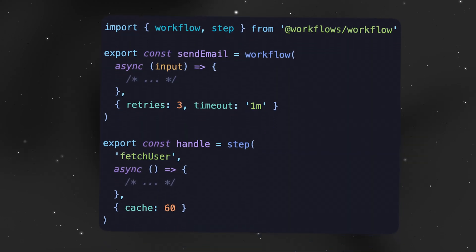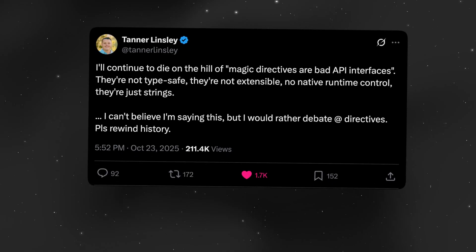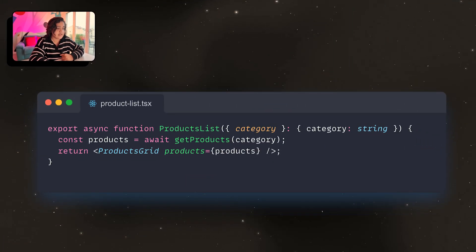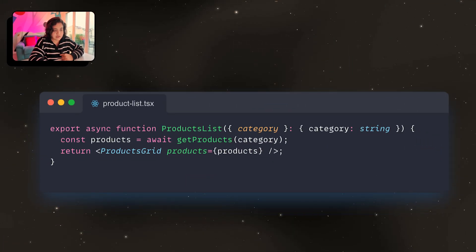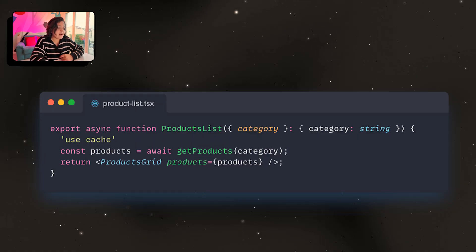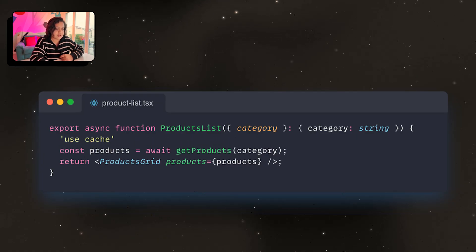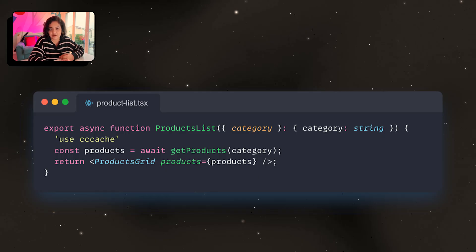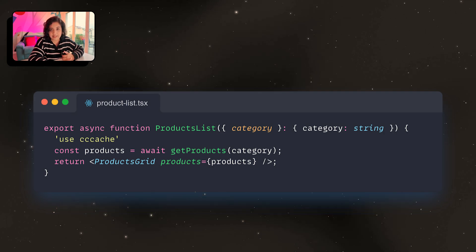The real question is: why not expose this as a function so we could import it? Tanner Linsley, the creator of the TanStack ecosystem, also had the same concerns — why are we doing this instead of just writing a function? For example, you have a function called 'getProduct' that fetches from a database. You could add the 'use cache' directive at the top, but that's just a string. You could accidentally type it with a typo and the compiler wouldn't even care, because it's just a string literal. TypeScript doesn't know that 'use cache' has changed the semantics — there's no autocomplete, no linting. It's just trust me, it's correct and it works.